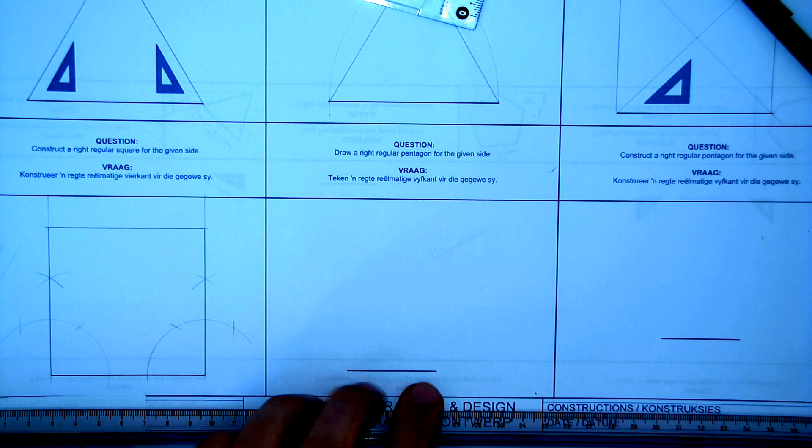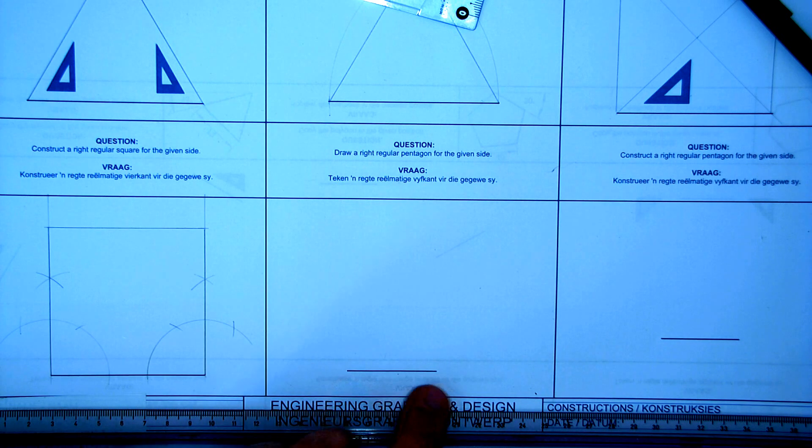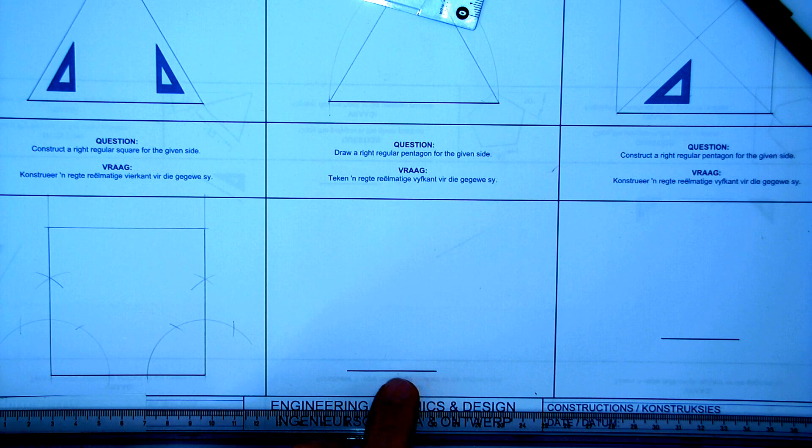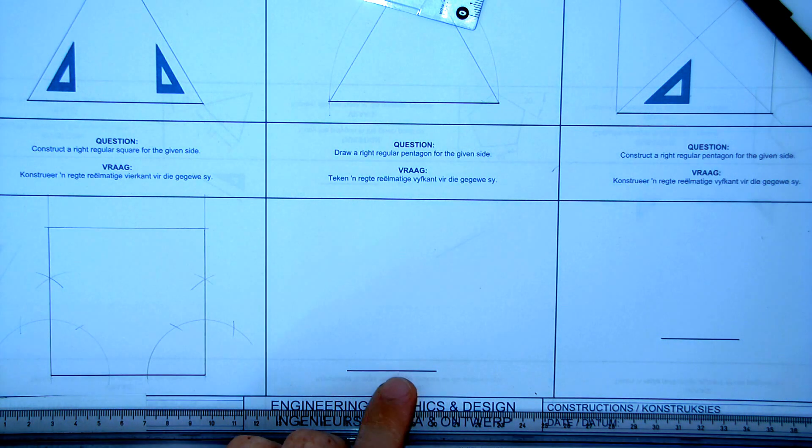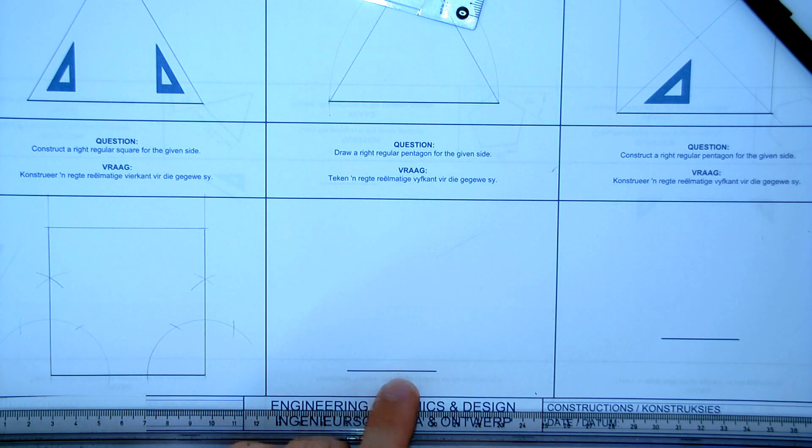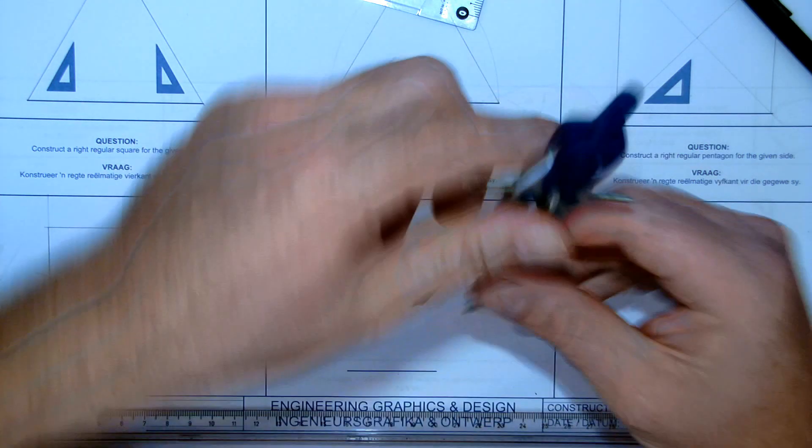So in our first step we are going to take this line. Now I have to draw a perpendicular line through it. Now you should know how to do this. I went through this in the previous video. If not, just go back and look again.